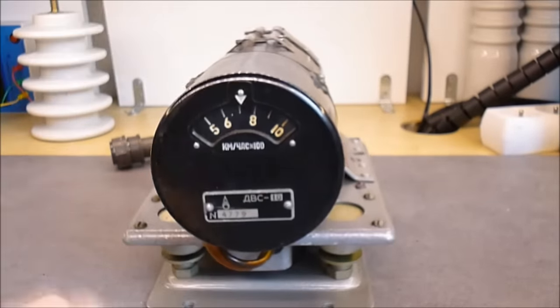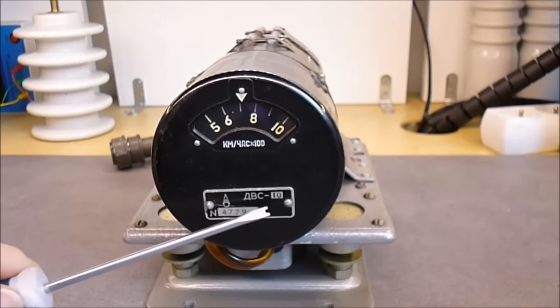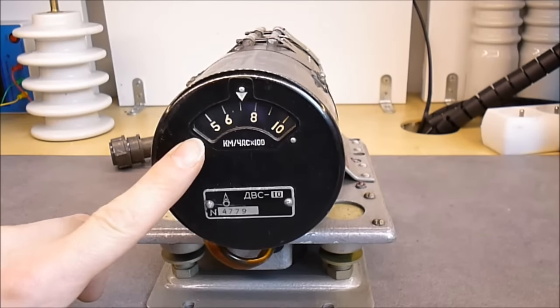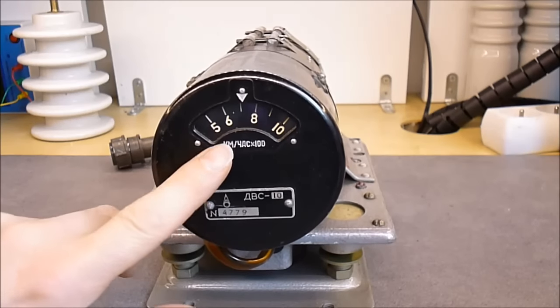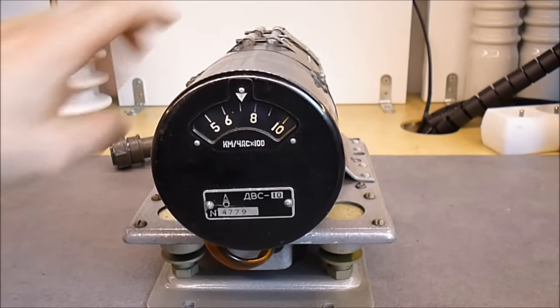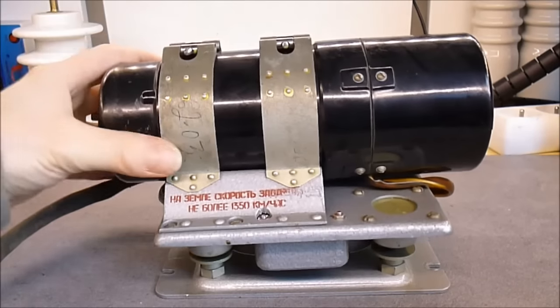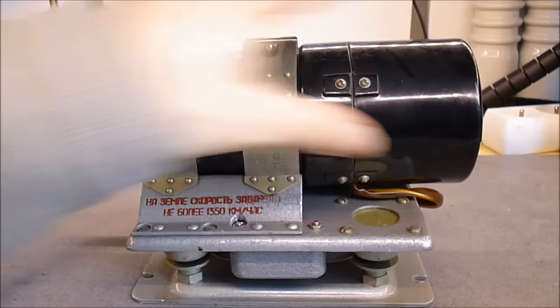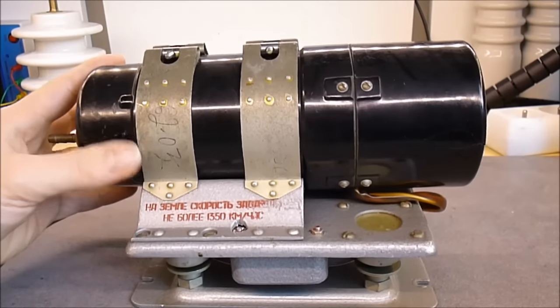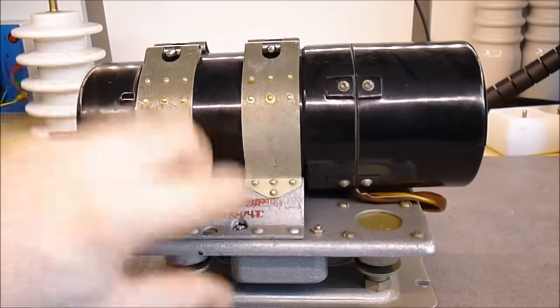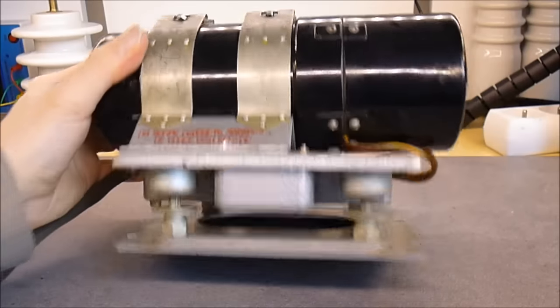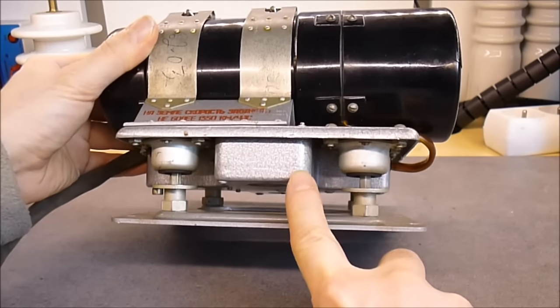So this thing is called DVS-10, serial number 4779. Here you have a dial where you can see the speed in kilometers per hour times 100. So as you can see we have two parts on this device, well maybe even more parts. We have this black cylinder where most of the stuff happens. We have this support bracket with shock absorbers, and here at the bottom we have a box with some electronics.